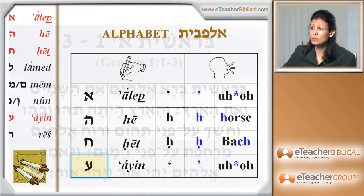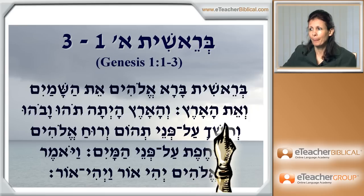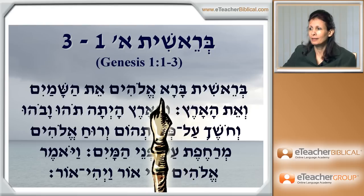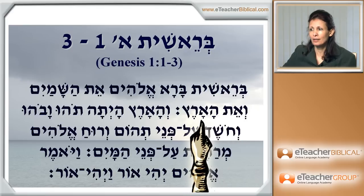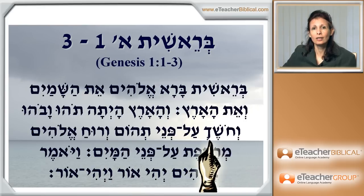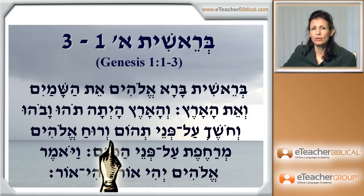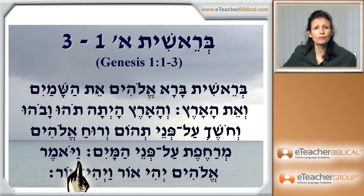Now why don't we see those four letters in Genesis, the three verses. I will read, and try to find those letters within the verses that I read to you. [Reading Genesis 1:1-3 in Hebrew]: Beresheet bara Elohim et hashamayim ve'et ha'aretz. Ve'ha'aretz hayeta tohu vavohu, vechoshech al pnei tehom, veruach Elohim merachefet al pnei hamayim. Vayomer Elohim yehi or.